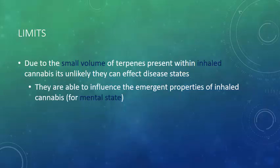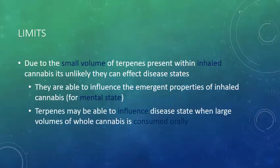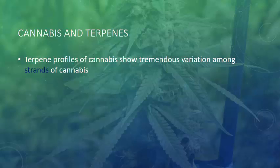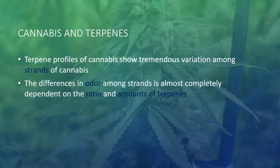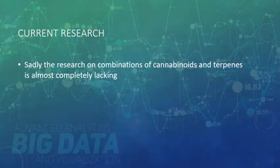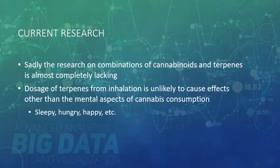I can't stress this enough though: there is enough terpenes to influence the emergent properties of inhaled cannabis. So your mental state has much to do with the terpene profile. Terpene profiles of cannabis show tremendous variation among different strains, and in fact the differences in odor among strains is almost completely dependent on the ratio and amounts of terpenes. Sadly, the research on combinations of cannabinoids and terpenes is almost completely lacking, and dosage of terpenes from inhalation is unlikely to cause effects other than the mental aspects.